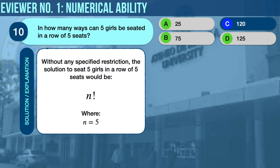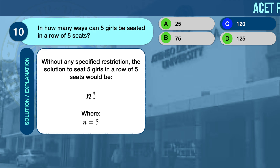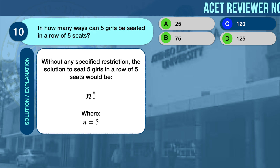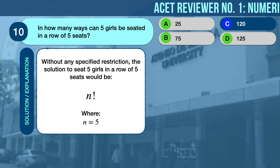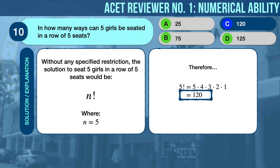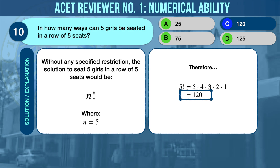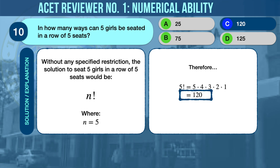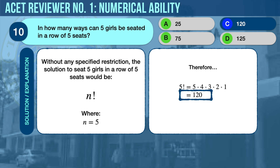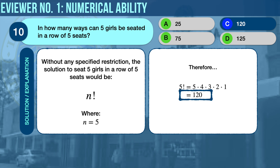The correct answer is C, 120. Without any specified restriction, the solution to seat five girls in a row of five seats is n factorial, where n = 5. Therefore, 5! = 5 × 4 × 3 × 2 × 1 = 120.